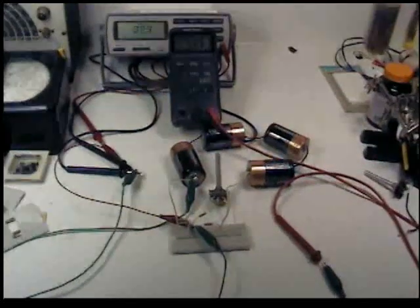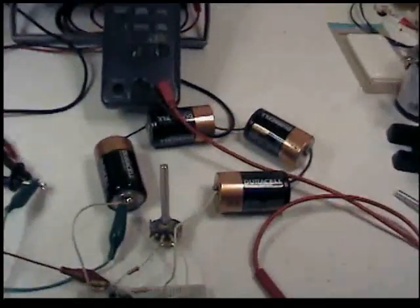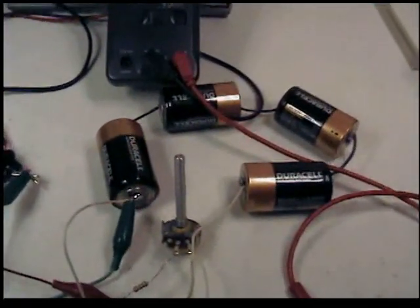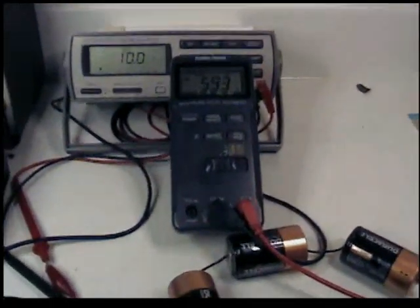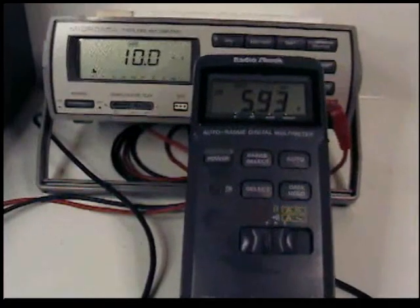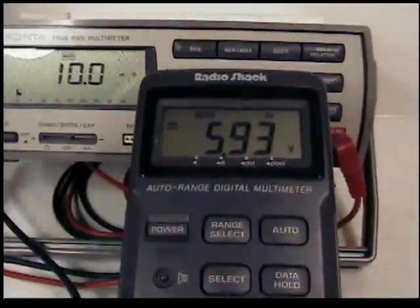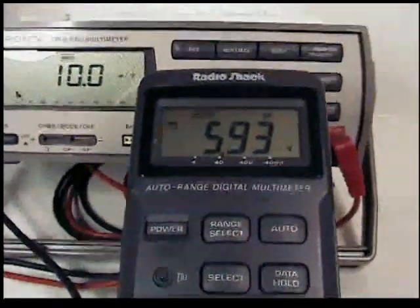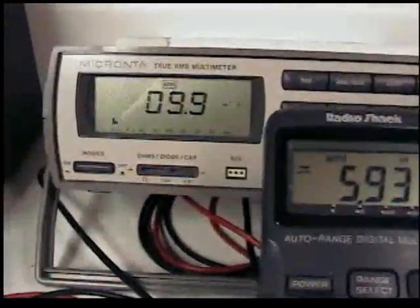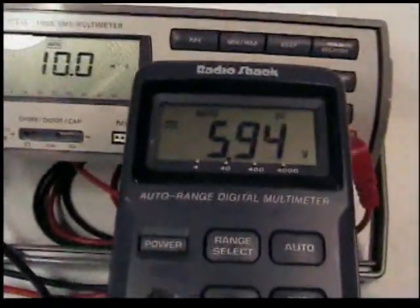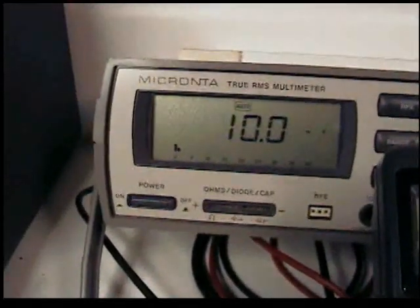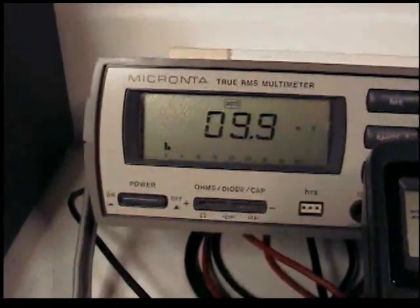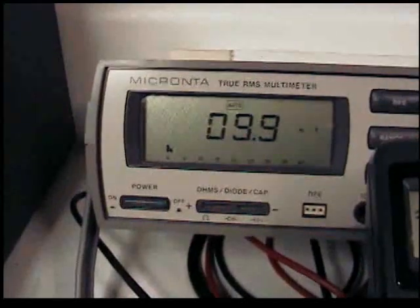Here's the setup. You can see the D batteries here. We've got six volts there. And I've got two meters. This meter right here is monitoring the collector voltage which is almost six volts. This is monitoring the base voltage which is about 10 millivolts.